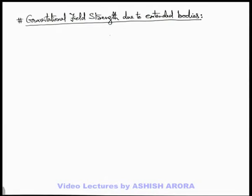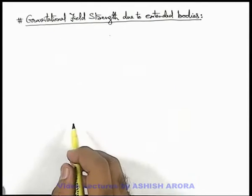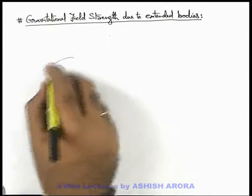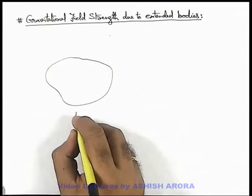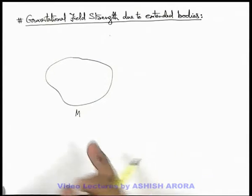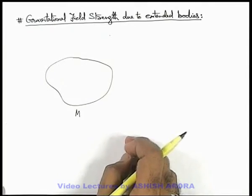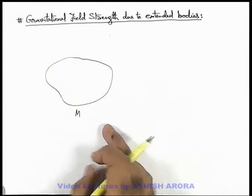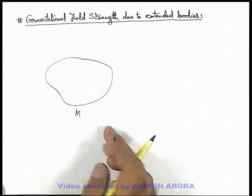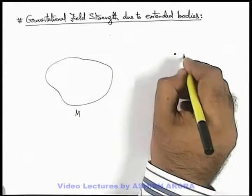In continuation we can discuss gravitational field strength due to extended bodies. Say if we are having an extended body of mass M. As we have discussed that every mass creates a gravitational field in its surrounding.